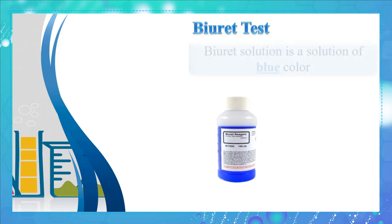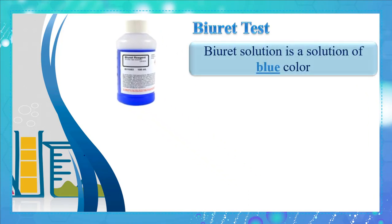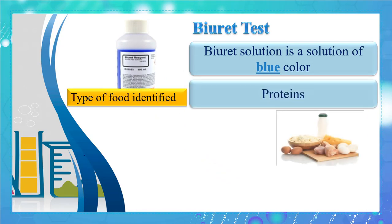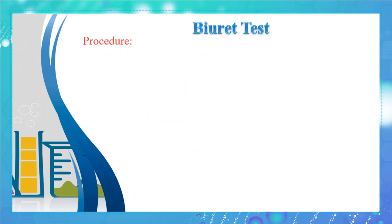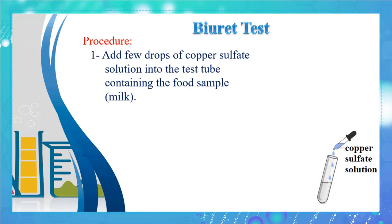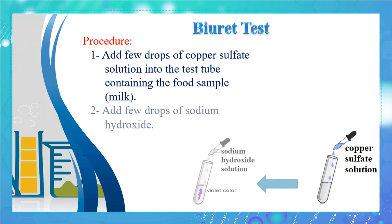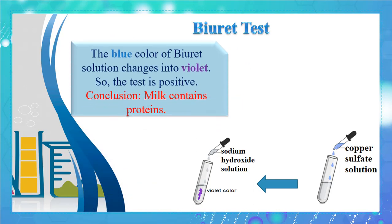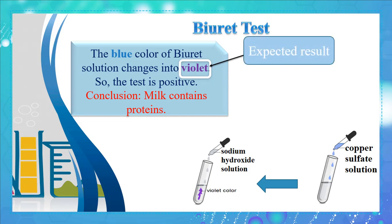The biuret solution is blue in color and is composed of copper sulfate and sodium hydroxide. The type of food identified is protein. Procedure: add a few drops of copper sulfate solution into the test tube containing the food sample, such as milk, then add a few drops of sodium hydroxide and observe the result. The blue color of the biuret solution changes to violet. Violet is the expected result, so the test is positive and we conclude that milk contains protein.